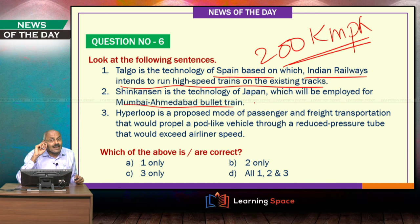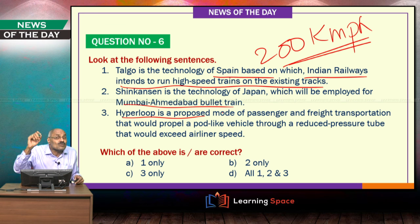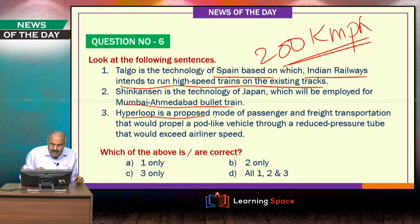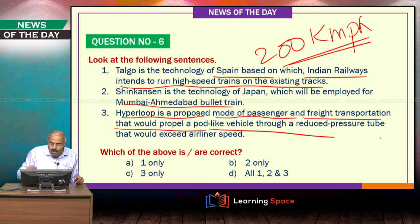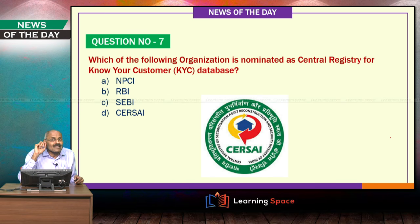We also discussed yesterday about the Hyperloop and Baby Boom. Baby Boom is the fastest aircraft manufactured recently in the United States. Hyperloop is the proposed mode of passenger and freight transportation that would propel a pod-like vehicle through reduced-pressure tubes. All three technology statements are correct — please remember these technologies.